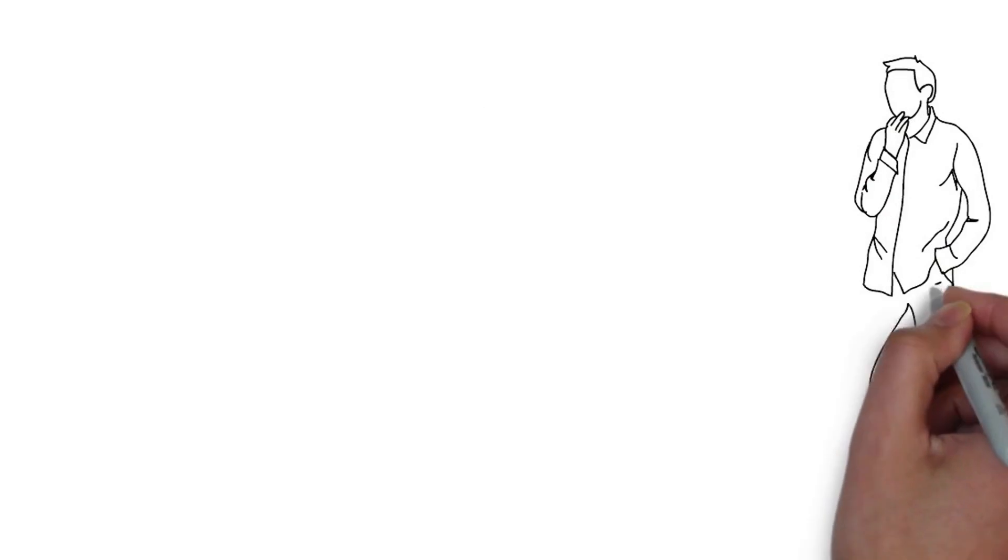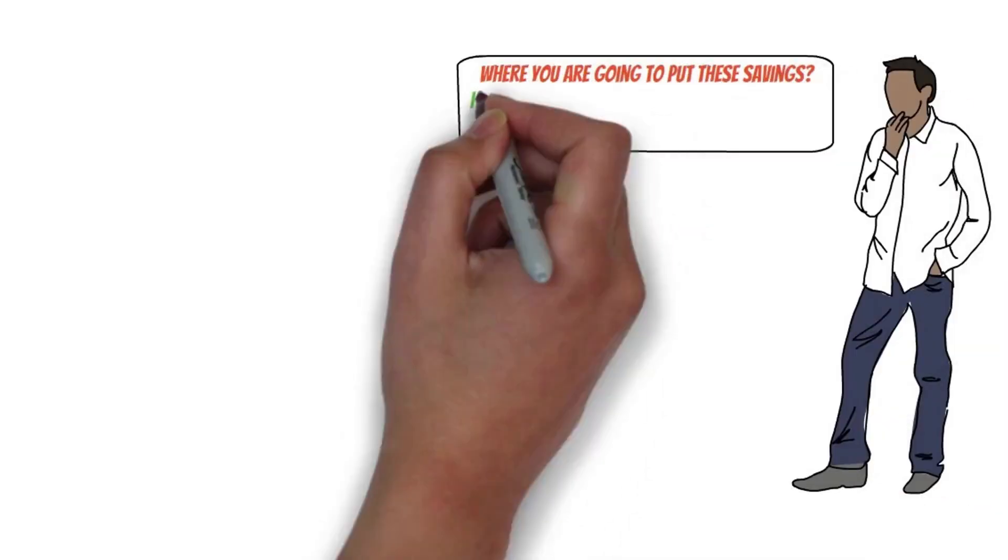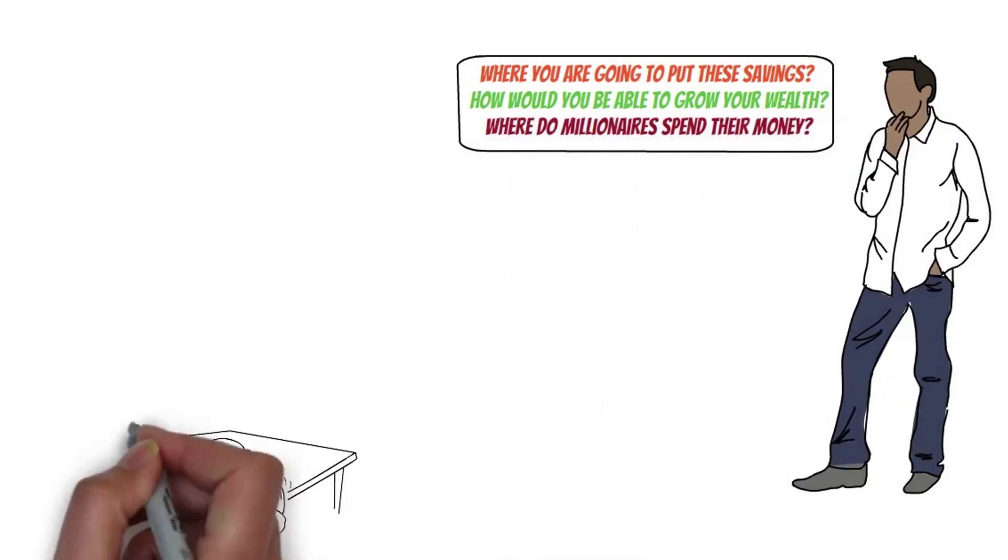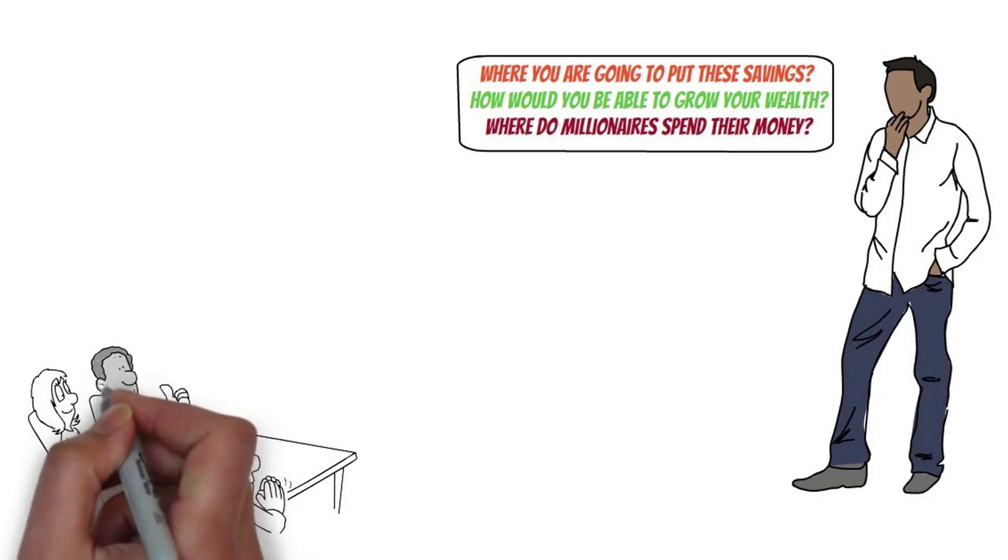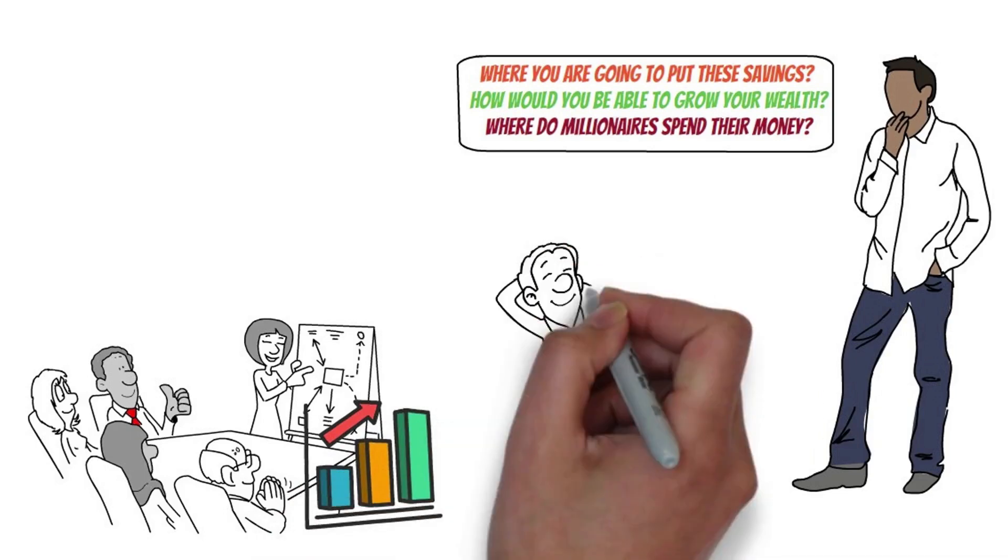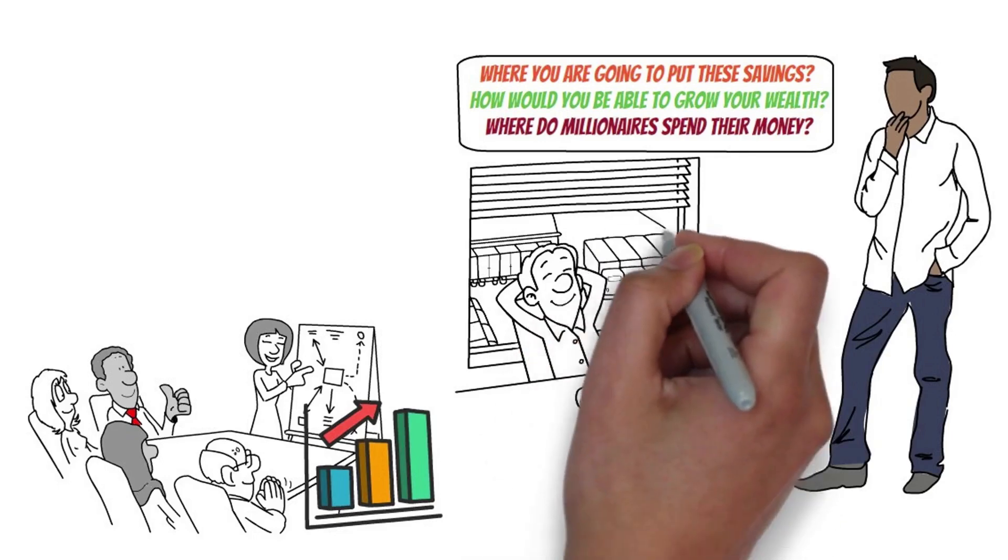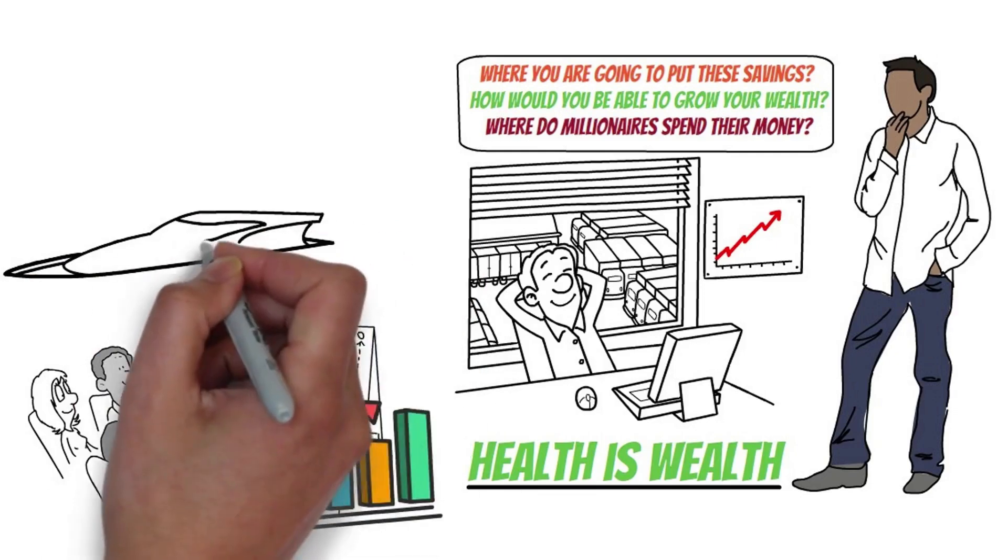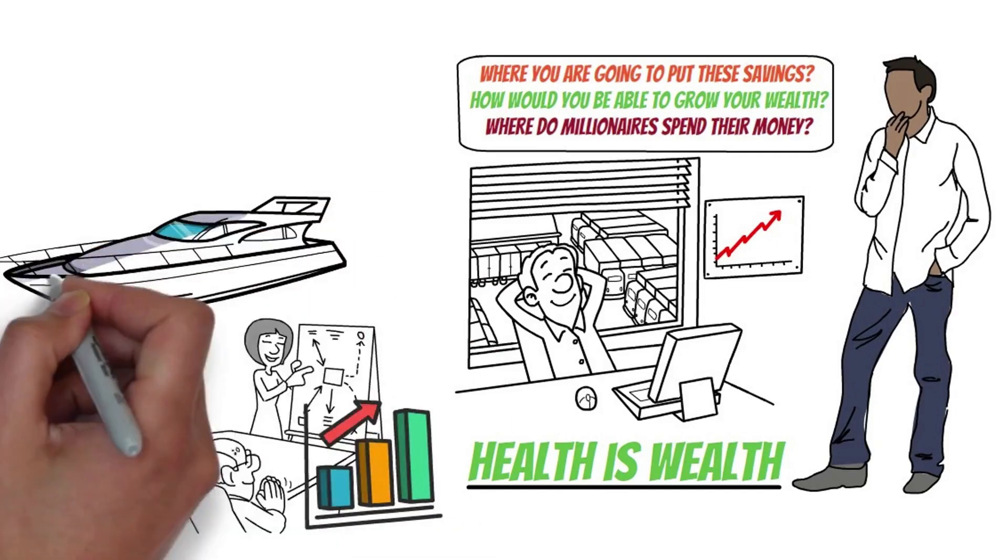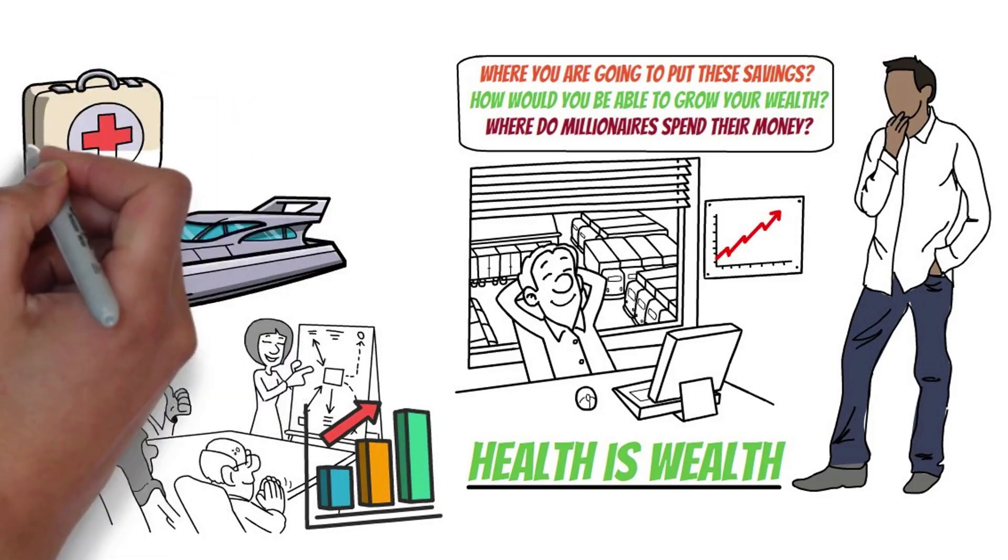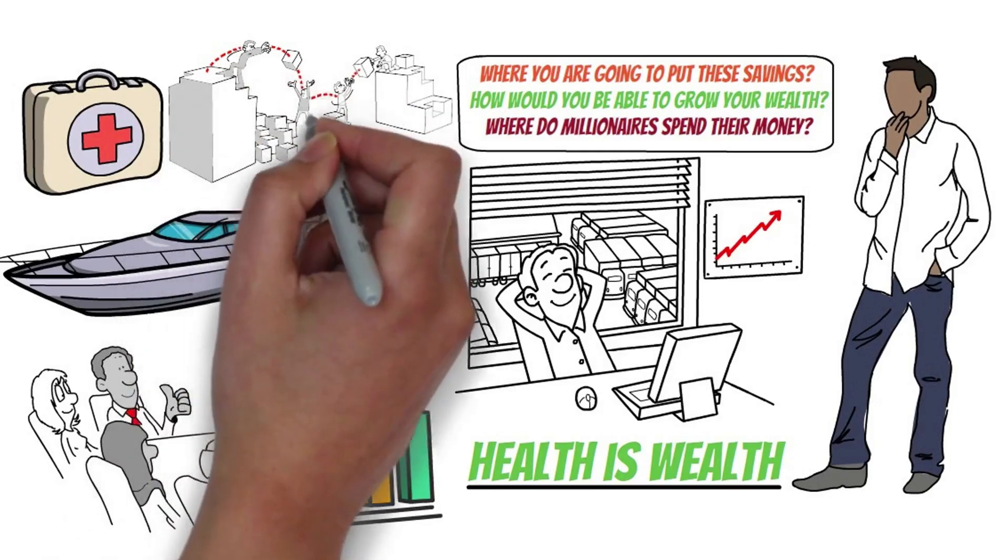The next thing that you should figure out is where are you going to put these savings. How would you be able to grow your wealth? Millionaires accumulate wealth and grow their money through smart investments. They know that spending money to grow their business and take care of their health is a smart move. Health is wealth. Although typical millionaires are not easily falling for luxury brands, they're not afraid to spend their money on medical care and investment services.